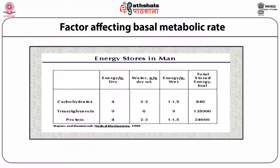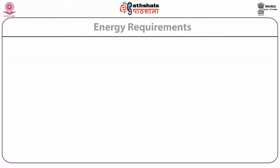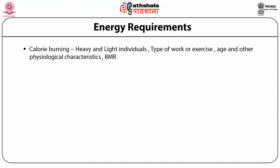Energy stores in man include carbohydrates, triglycerides and protein. The total energy stored is approximately 840 kilocalories for carbohydrates, 135,000 kilocalories for triglycerides and 24,000 kilocalories for proteins. Energy requirements depend upon calorie burning, heavy and light individuals, type of work or exercise, age and other physiological characteristics, basal metabolic rate, and type of exercise and calories burned.